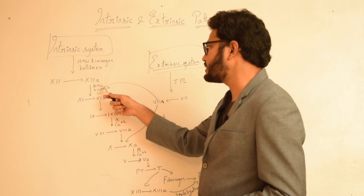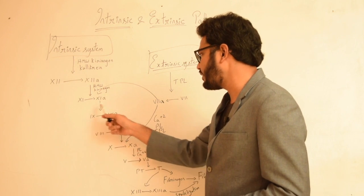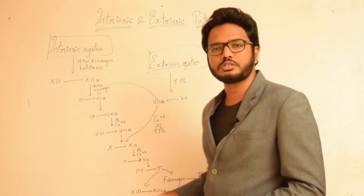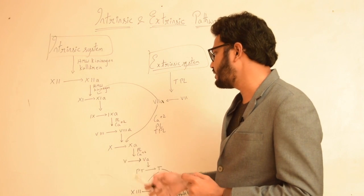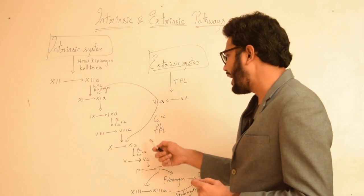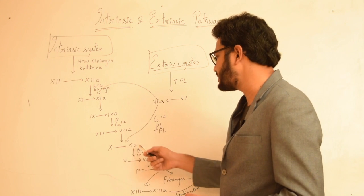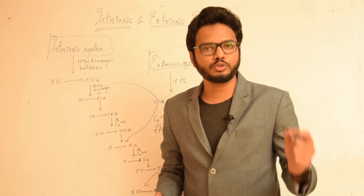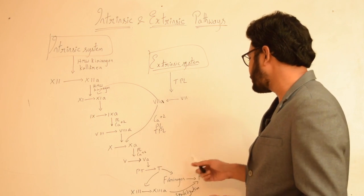Factor 12a activates factor 11 in the presence of high molecular weight kininogen, which in turn activates factor 9. Factor 9 in turn activates factor 8 in the presence of phospholipids and calcium ions. This activated factor 8 then activates factor 10, and this activated factor 10, in the presence of calcium ions and phospholipids, activates factor 5.